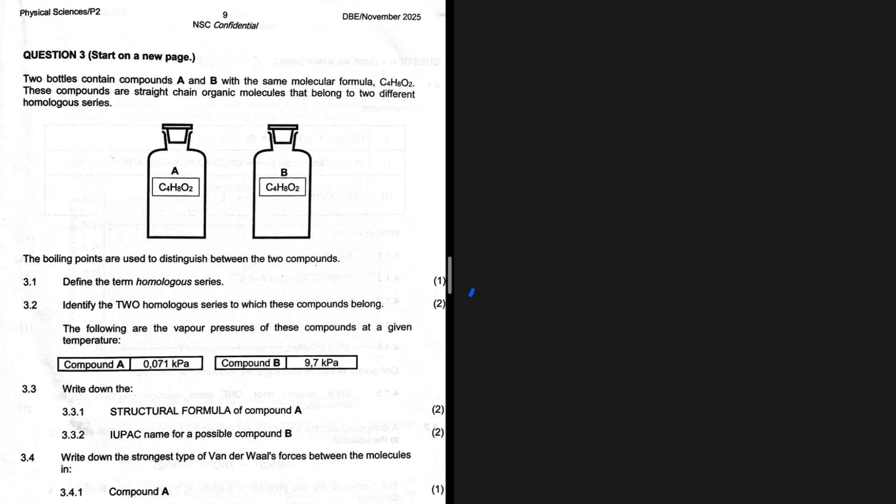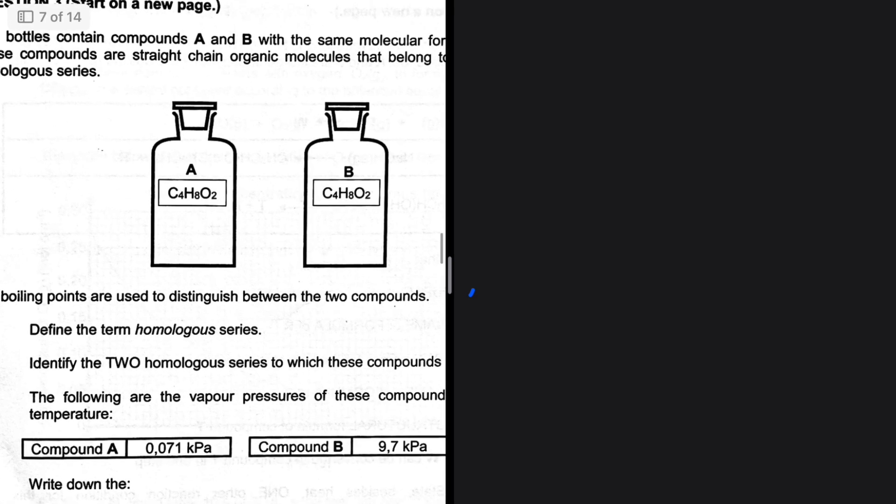The boiling points are used to distinguish between the two compounds. 3.2: Identify the two homologous series to which these compounds belong. So you can see the general formula - we have O2. That only happens when we have...